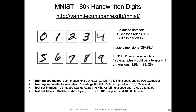For this, we will consider a relatively simple dataset, the MNIST dataset, which I already introduced in the introductory lectures. These are 60,000 handwritten digits in the training set, and it's a nice and balanced dataset. Balanced means that there's the same number of training examples per class. In this case, we have 10 classes — the handwritten digits zero to nine — and there are 6,000 digits per class.